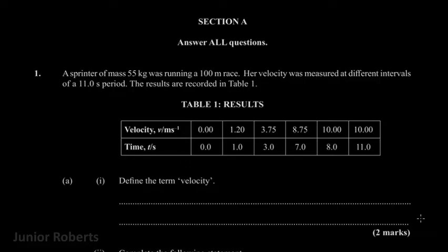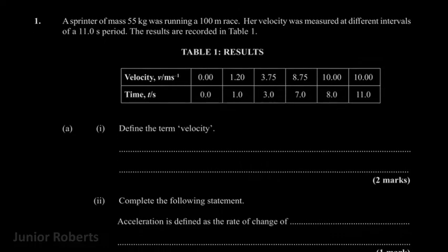We're going to go right into this video. Question one says: a sprinter of mass 50 kilograms was running a 100-meter race. Velocity was measured at different intervals of an 11-second period. The results are recorded in table one, where the velocity and the time were recorded for that 11-second journey.